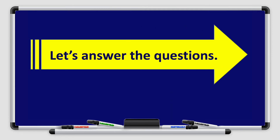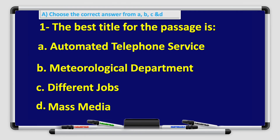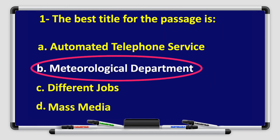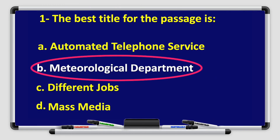Now let's answer the questions together. Choose the correct answer from A, B, C, and D. The best title for this passage is: A. Automated Telephone Service, B. Meteorological Department, C. Different Jobs, D. Mass Media. Excellent — the best title for the passage is Meteorological Department.